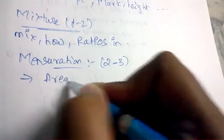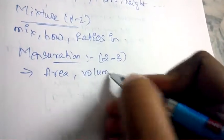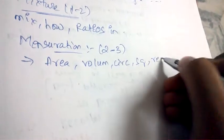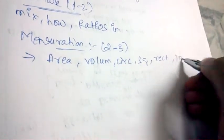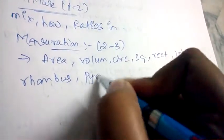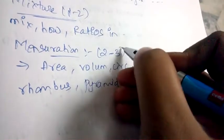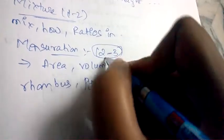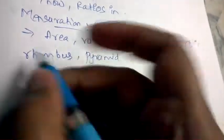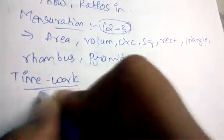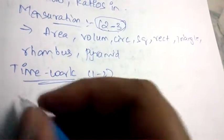In Mensuration, the topics covered are areas, volumes, circles, squares, rectangles, triangles, rhombus, and pyramids. The weightage of mensuration in Group D railway examinations is only 2 to 3 questions.